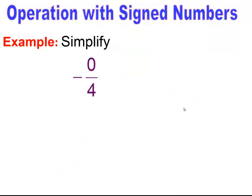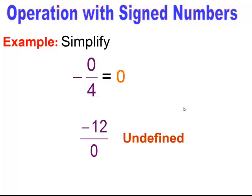So in this case, negative zero divided by four: the negative sign doesn't matter — I'm dividing into zero, therefore my answer is zero. But zero being divided into negative twelve is undefined, because you can't divide zero into any number.